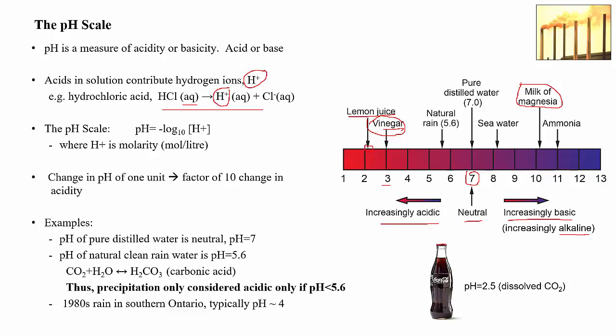To give some idea of how bad acid rain was in the past: in the 1980s, when acid rain was at its worst, rain in Toronto had a pH of about 4, sometimes even less. If you do the math, that's about 40 times more acidic than natural clean rainwater.